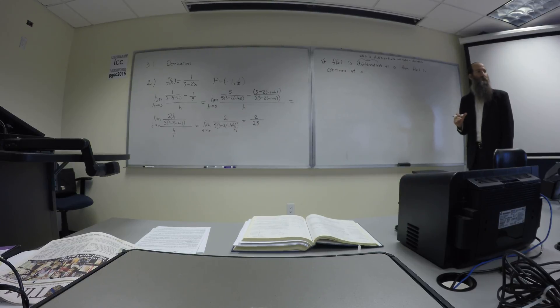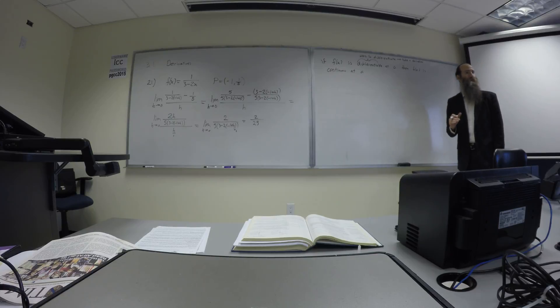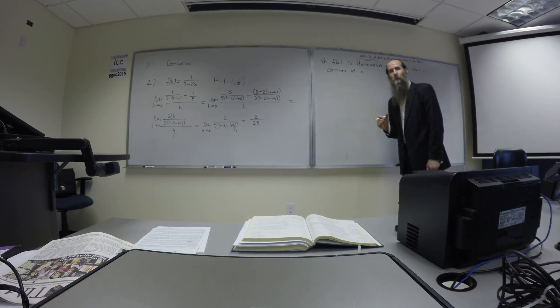The reverse is not true. That's the important thing to remember is the order. Just because something is continuous does not make it differentiable, does not make it able to take a derivative there. It may not have a slope there. So how does something not have a slope now is the question you want to ask.